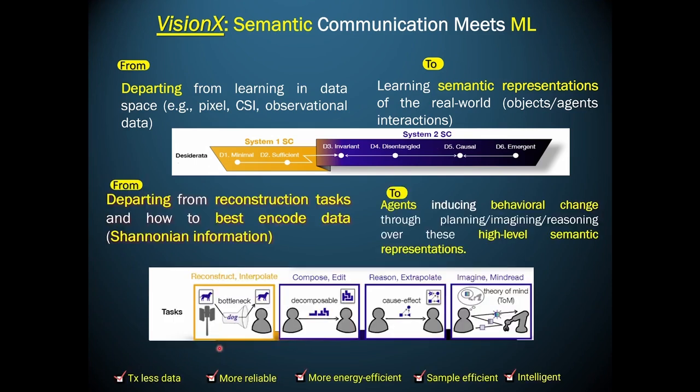With this, we can actually learn models with less data, more reliably. We are more sustainable, and we are truly intelligent because this is what 6G promised to do. So with that, thank you very much.